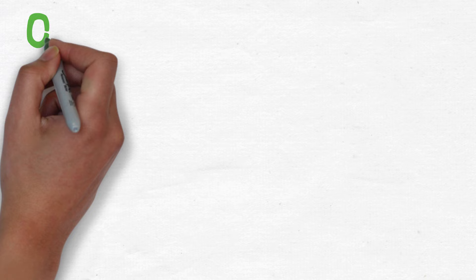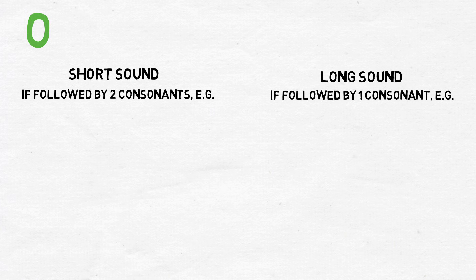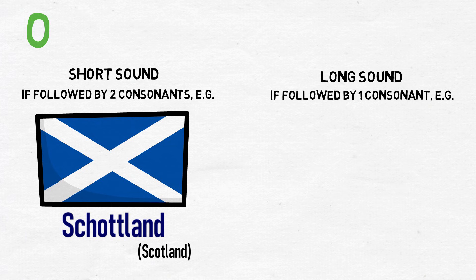The letter O has the same rule regarding double and single consonants, so it alternates between a short O and a long O. For example, short: Schottland, meaning Scotland; and long: Brot, meaning bread.